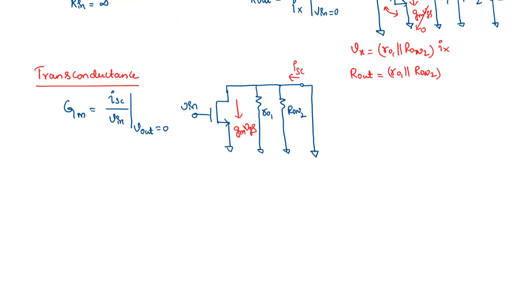There won't be any current flowing through R01 and Ron2. So the entire GM times Vgs should be equal to Isc. So let me write this here: Isc should be equal to GM times Vgs, where Vgs is equal to Vin. Hence when we write Isc over Vin, this is nothing but Gm, which is equal to Gm.